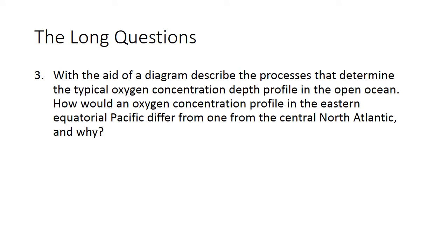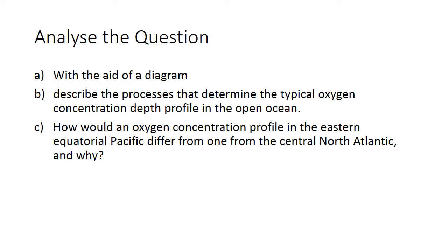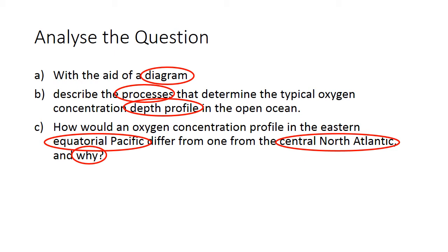Moving on to the longer questions. The first one was asking about the oxygen profile in the ocean. I've split this question into three parts. The first part is asking you to draw a diagram — if a question says 'with the aid of a diagram' and you don't draw one, you're in trouble. The second part is asking you to describe the processes that determine the typical oxygen concentration profile in the open ocean. The third part is asking you to compare profiles in the equatorial Pacific versus the central North Atlantic — those specific regions are important.